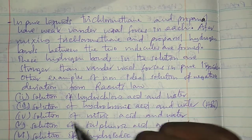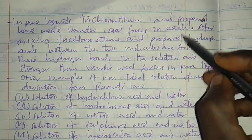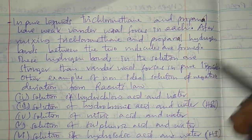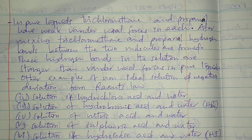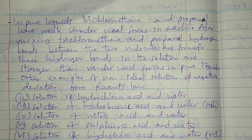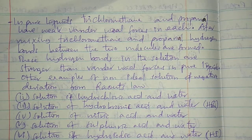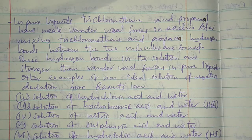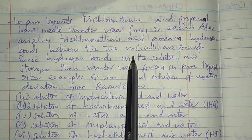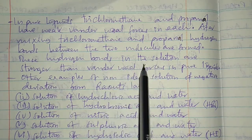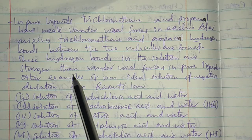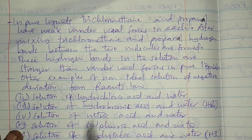After mixing trichloromethane and propanone, they form hydrogen bonds between the two molecules. Due to the formation of hydrogen bonds, which are the strongest intermolecular force of attraction, the intermolecular force of attraction in the solution will be greater. These hydrogen bonds in the solution are stronger than the Van der Waals forces in the pure liquids.